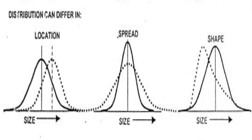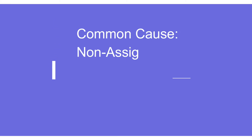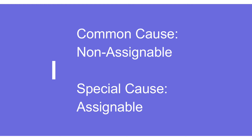The third aspect is shape — the shape of the process distribution. Whether the shape is correct or not, it can be symmetrical, asymmetrical, or show variations. All of these changes in shape, location, and spread occur because of two key things: common cause and special cause.